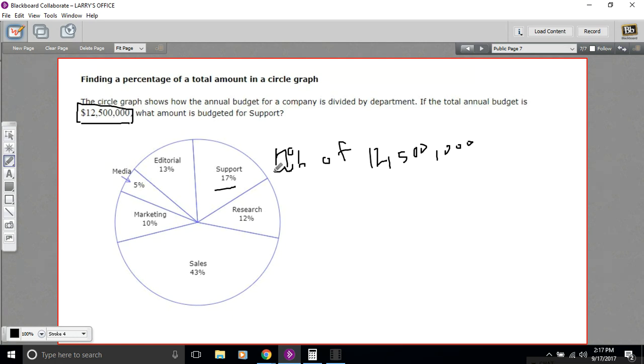We do that by moving the decimal place two points to the left, two places to the left. It's the same as dividing this number by 100, but it's going to be 0.17 times 12,500,000.